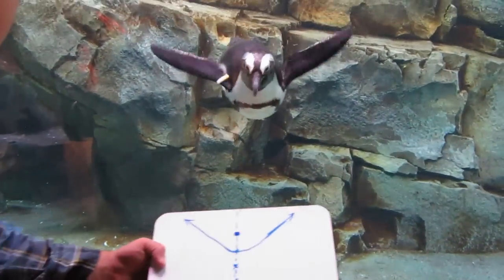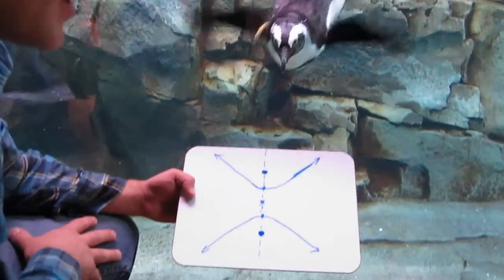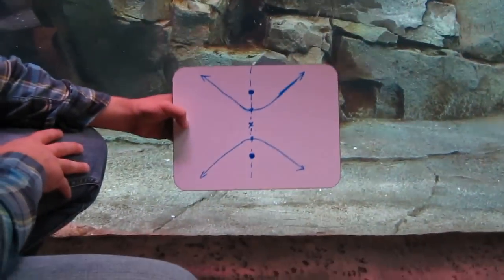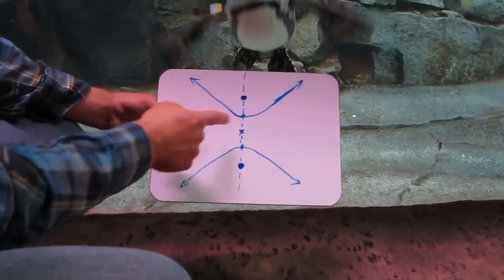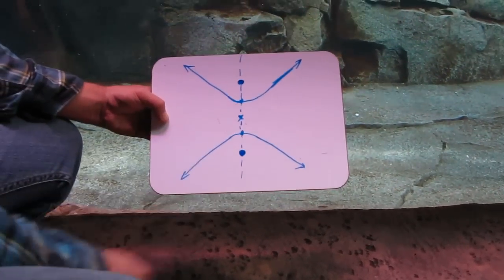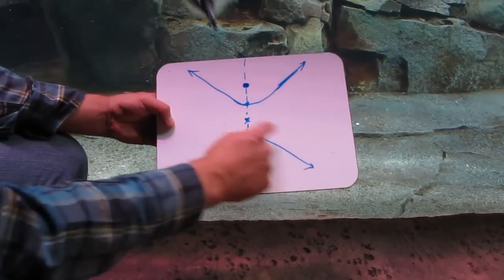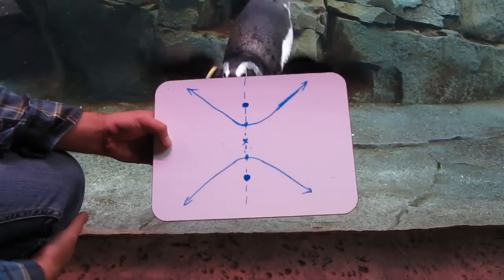This is an African penguin, and he's just as interested in hyperbolas as I am. Here we have a hyperbola, and right here, this is called the transverse axis. It cuts the two U shapes in half.